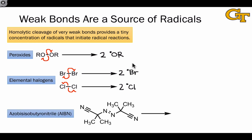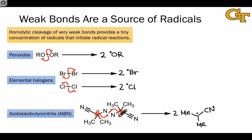One last radical initiator to mention is azobisisobutyronitrile, or AIBN. This doesn't look like a molecule with a weak bond — it's full of carbon–carbon, carbon–nitrogen, and carbon–hydrogen bonds. But it has features that lead to the production of stabilized radicals. If these carbon–nitrogen bonds break homolytically, we end up with resonance-stabilized radicals at these carbons, because we can engage the adjacent triple bonds in resonance to delocalize the radical character. Additionally, homolytic cleavage produces a new triple bond between the central nitrogens, generating diatomic nitrogen gas. So homolytic cleavage in AIBN produces a gas irreversibly that leaves the reaction mixture, leaving these radicals behind to initiate radical reactions.